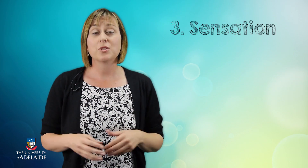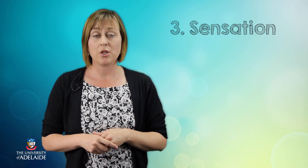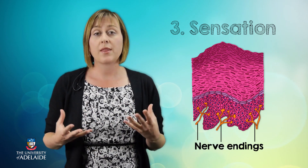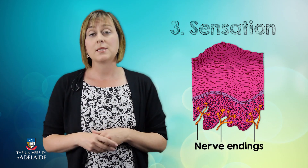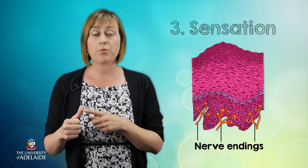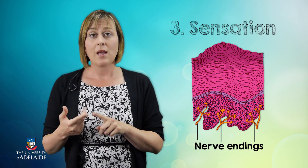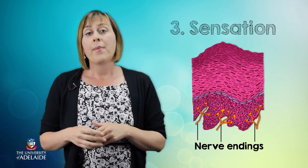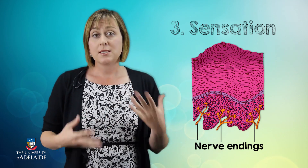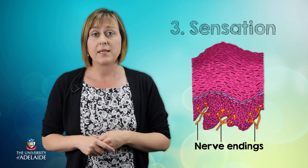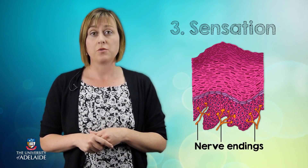Epithelial tissue has a really rich nerve supply. This is really important because these nerves gather important sensory information such as pressure, pain and temperature. By being able to detect all of these sensations, it can actually stop us from hurting ourselves.